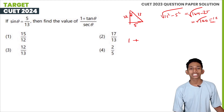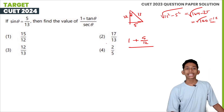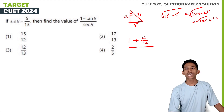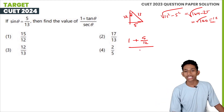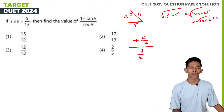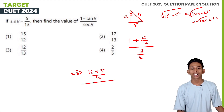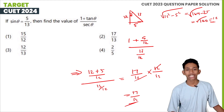1 + tan θ: tan θ equals opposite over adjacent = 5/12. Sec θ: since cos θ = adjacent/hypotenuse = 12/13, sec θ = 13/12. So the numerator is 1 + 5/12 = 17/12, and the expression becomes (17/12) divided by (13/12), giving the value of (1 + tan θ) / sec θ.